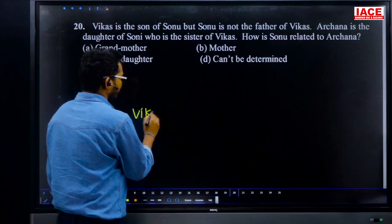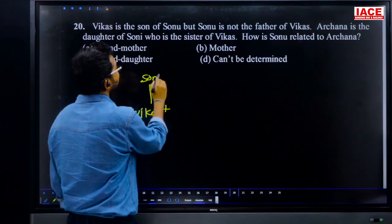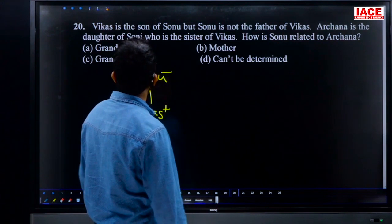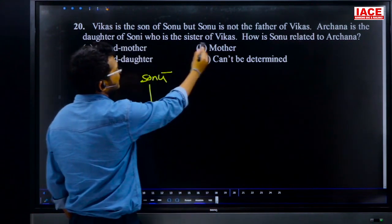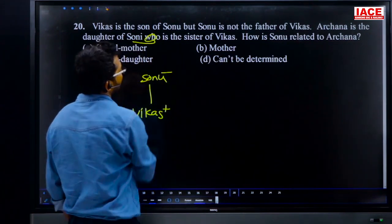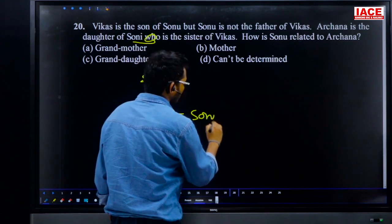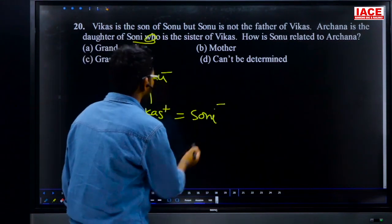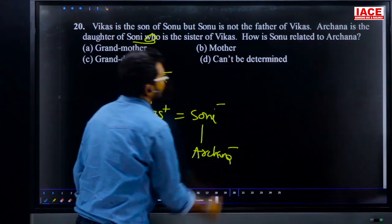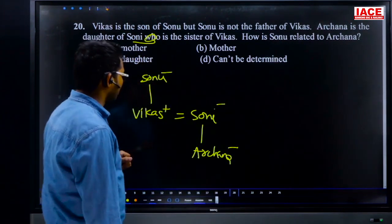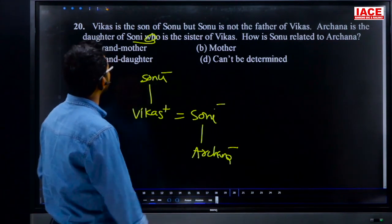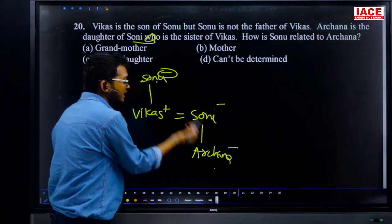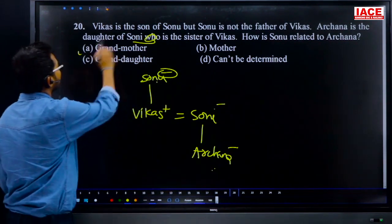Question 20: Vikash is the son of Sonu. Sony is the sister of Vikash. Archana is the daughter of Sony. How is Sony related to Archana? Sony is Archana's mother, and since Sony is Vikash's sister — tracing the family tree — Sony is Archana's mother. So Sony is related to Archana as grandmother is not applicable; Sony is the mother of Archana. Answer: grandmother — option C.